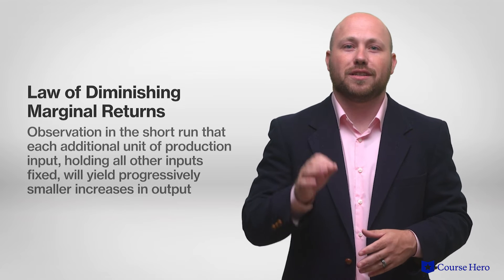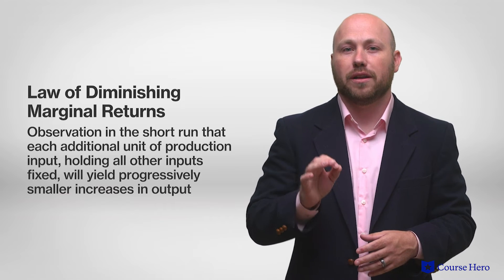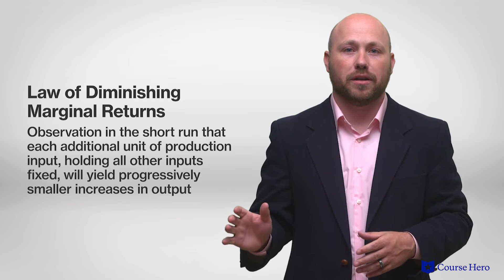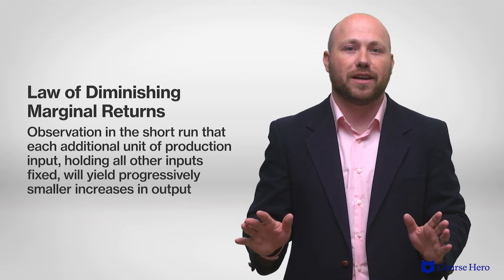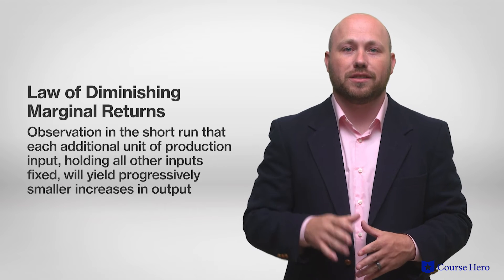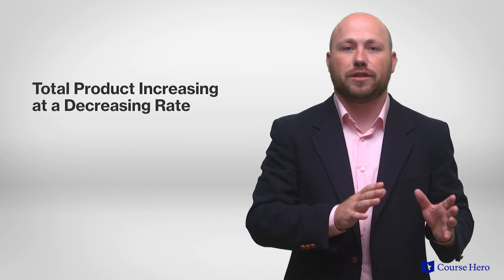However, the benefits of specialization will diminish and workers may start to get in the way of other workers. When further inputs result in a slower rate of increase in total product, the marginal product, while still positive, starts to be reduced. The rate of increase in output slows down, eventually reducing the output. This is often referred to as total product increasing at a decreasing rate.